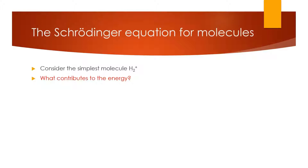The first question we want to ask — and we know the answer as chemists — is what a bond is. You know that a bond is a shared pair of electrons. What we're going to do in this section is investigate what this shared pair of electrons is, what this bond is, in terms of quantum mechanics.